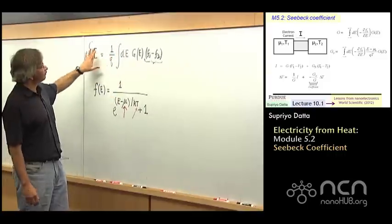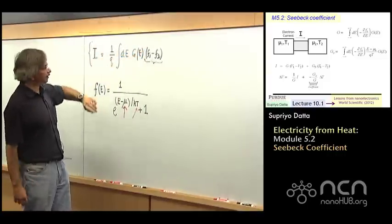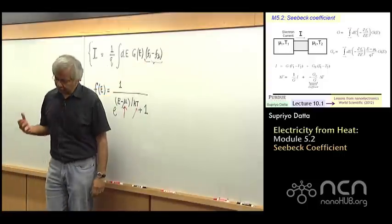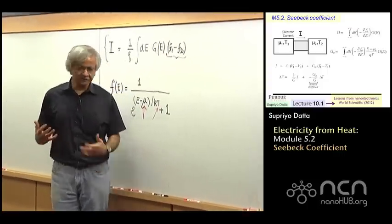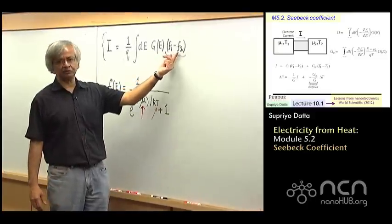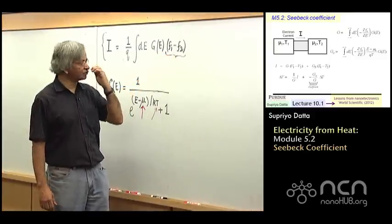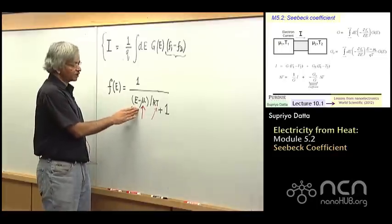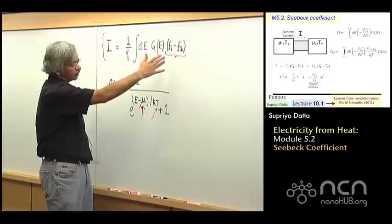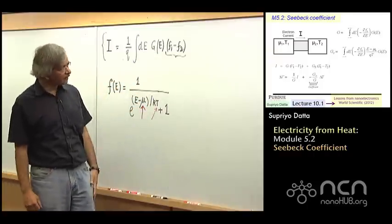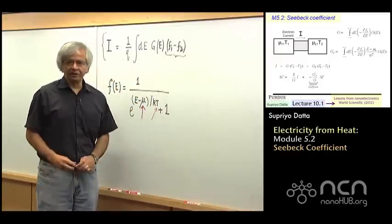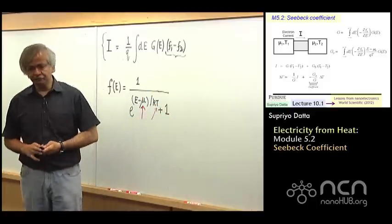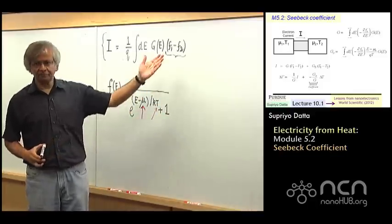Namely, this basic expression that we had obtained earlier: current depends on F1 minus F2. So although we are talking of temperature-driven current, it's really driven by the difference between the two Fermi functions. With voltages, it was the Fermi functions differed because the electrochemical potential was different. Now we are talking of the case where the temperatures are different. What I'm going to do now is this module will try to get a little quantitative, and so it will be a bit of math now.